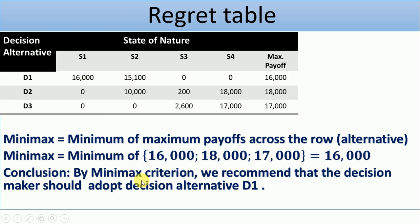By the definition of minimax — minimum of the maximum regret — we extract the maximum regret from the regret table: 16,000; 18,000; 17,000. The minimum of these three is 16,000. Therefore, we recommend D1, where we have 16,000. By the minimax regret criterion, the decision maker should adopt decision alternative D1.